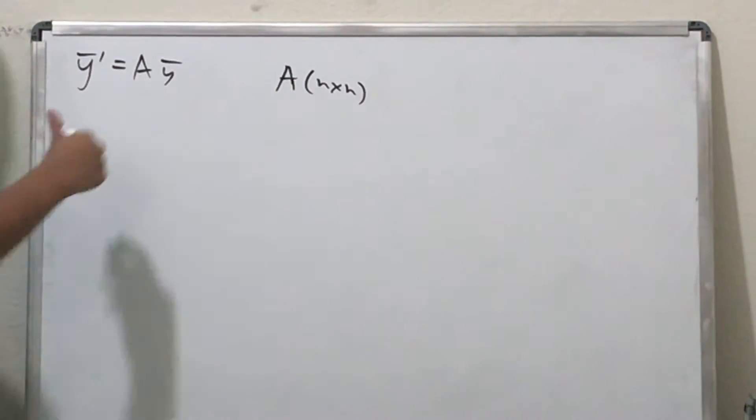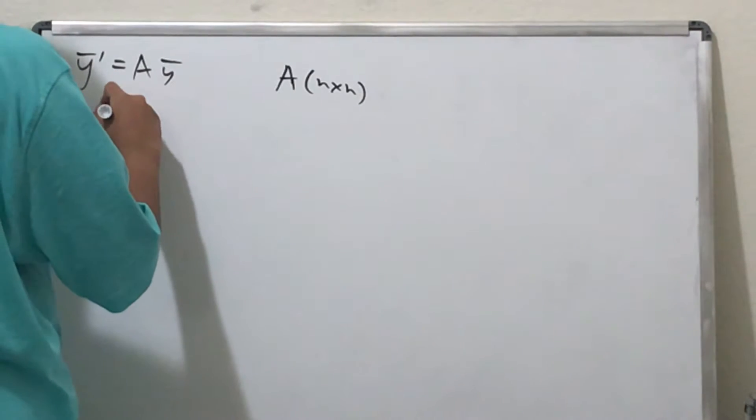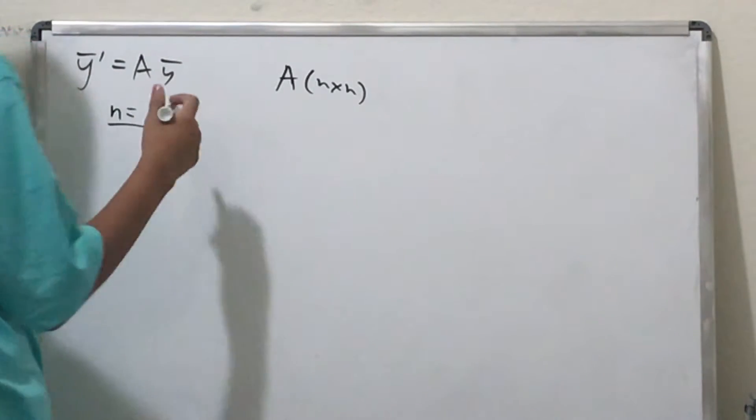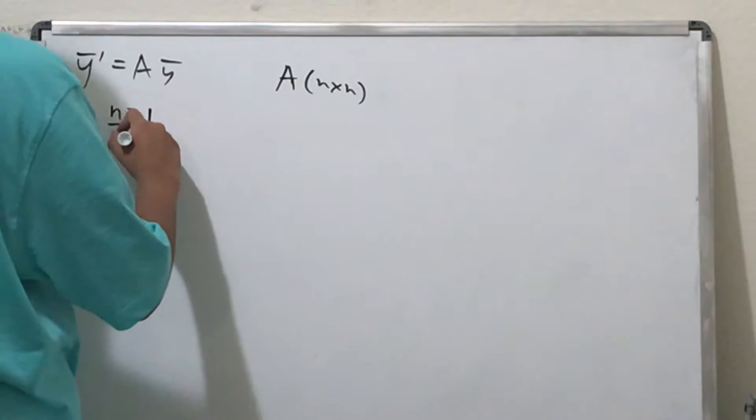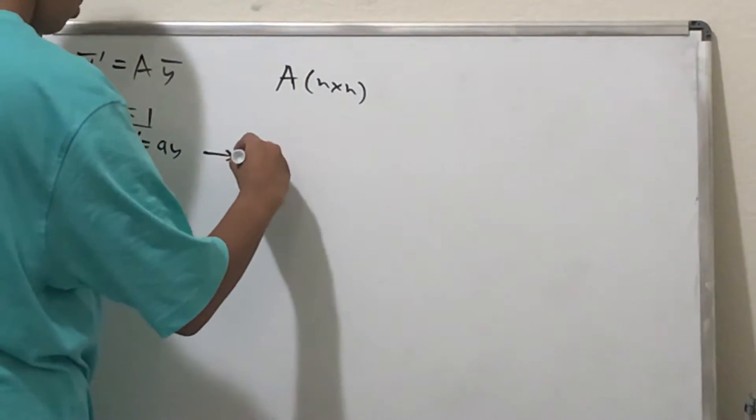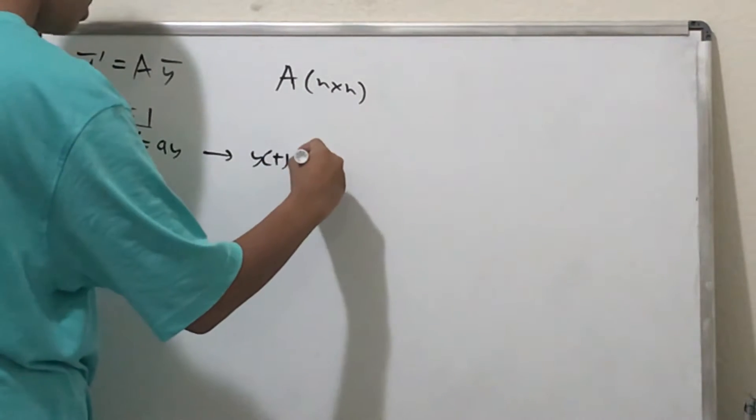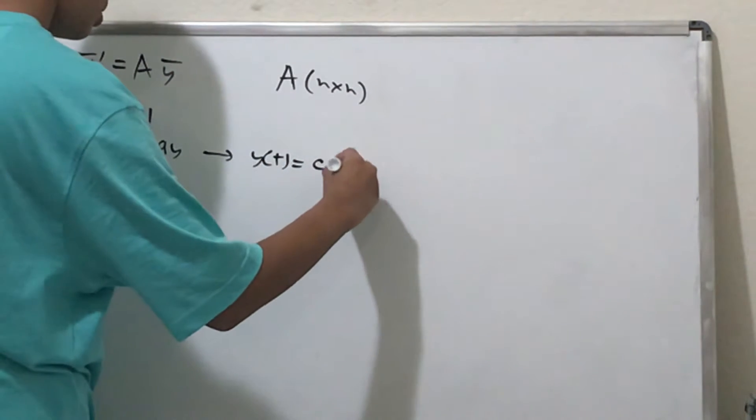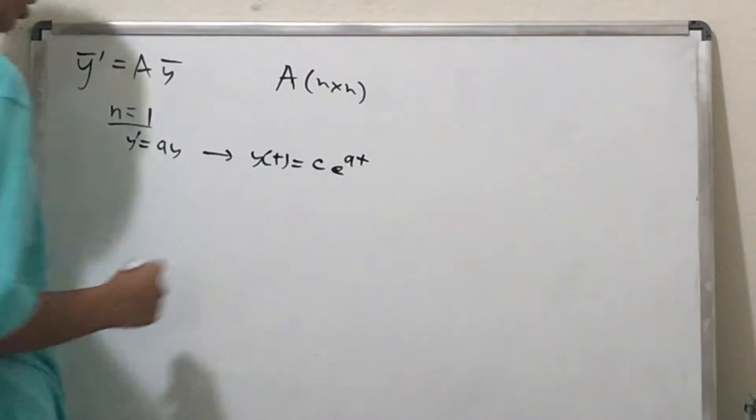Let's take the case where n = 1. So when n is 1, our matrix is 1 by 1, and it's simply y' = ay. This is a very simple equation, and it has a solution: y(t) is some constant times e^(at).